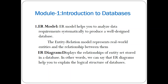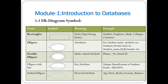An ER diagram displays the relationship of entities stored in the database. In other words, an ER diagram helps explain the logical structure of the database. It is used to represent the relationship between two or more entities and can also represent the properties of each entity type. There are various symbols used to represent relationships and entity properties.